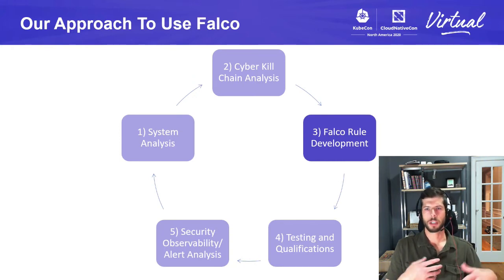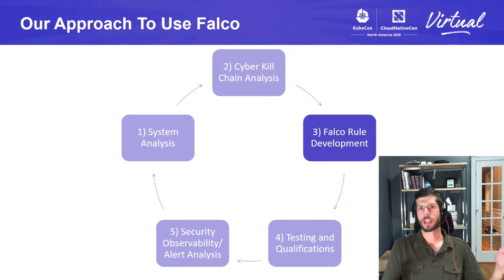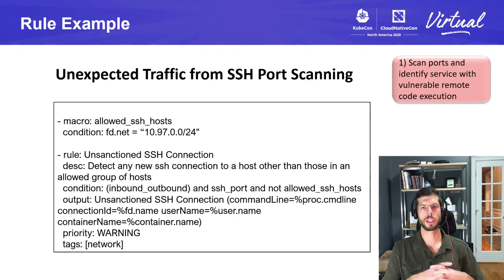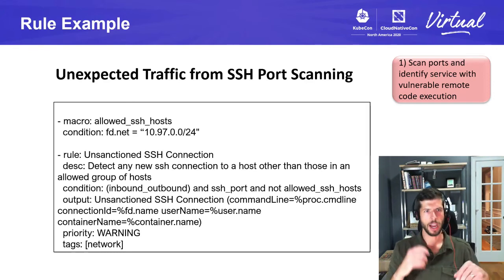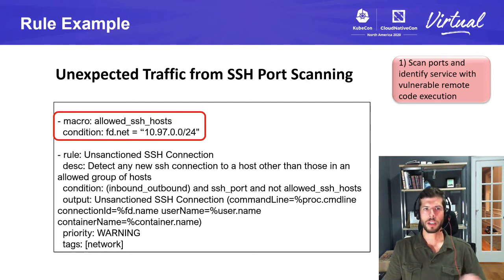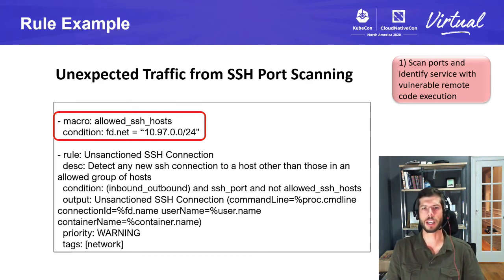Now that we understand how the system behaves and the steps an attacker could take, it's time to write Falco rules. Here's an example of a Falco rule — this one maps to the first step of the attack, the reconnaissance phase: scanning ports to identify services with a vulnerable remote code execution. Specifically, this rule looks at unexpected traffic over the SSH port. If an attacker scans port 22 for SSH, this would alert on that. The first section highlighted is a macro to define a whitelist of allowed SSH hosts — in this case an entire /24 CIDR block — and you could also do individual IPs.